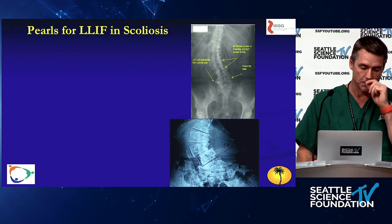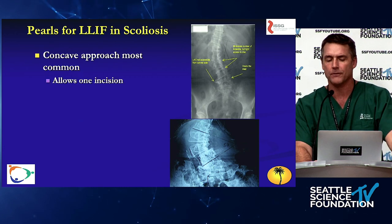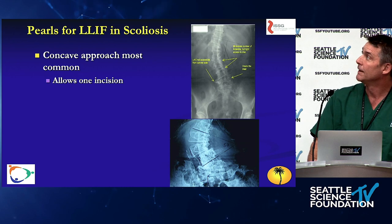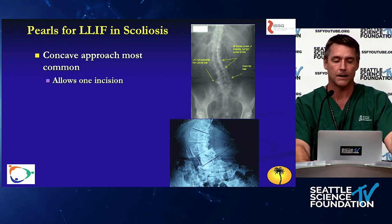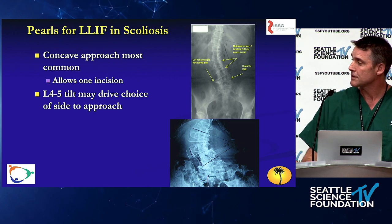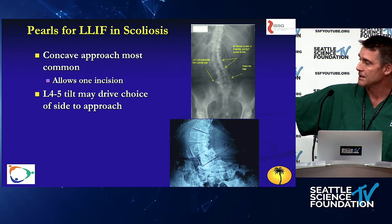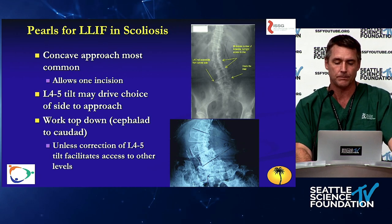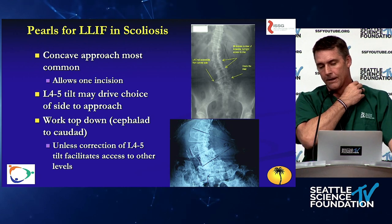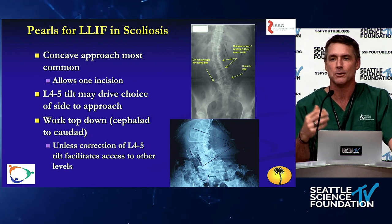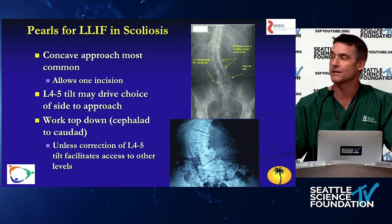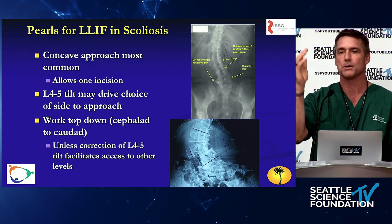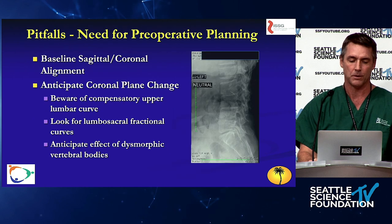Pearls for lateral approach in scoliosis: most often we use the concavity for the approach, which allows a single incision to access all levels from top to bottom. The L4-5 tilt will drive the approach choice in many cases — you can't get to L4-5 from the opposite side in the concavity, so those two principles will guide your approach. Notably, you want to work top-down. It doesn't seem intuitive until you do it, but you're building the spine away from yourself, correcting scoliosis relative to your incision — slowly derotating the spine and pushing the upper level away as you unwind the spine with your disc work.